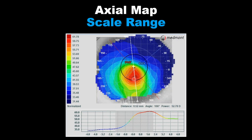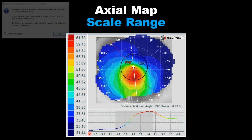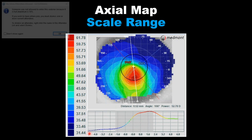Another way we could look at this eye is the distribution of power across the entire eye. Looking at the scale on the left side, this eye has power distributed from 31 diopters as the flattest up to 61 diopters as the steepest — a 30-diopter distribution of power across the eye. Podemos verificar la escala: desde 61.78 el punto más curvo hasta 31.44 el punto más plano — básicamente 30 dioptrias de diferencia corriendo de un lado a otro en esa córnea, lo cual obviamente no es normal.